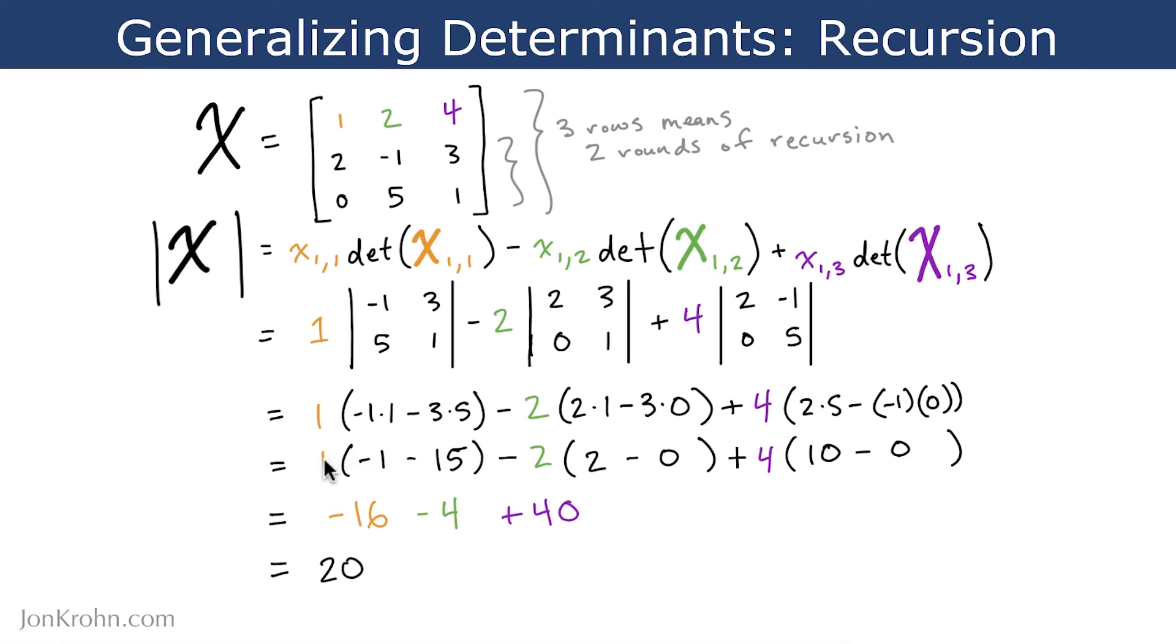Alright, and then 1 times negative 16 is negative 16. 2 times 2 is negative 4 because of the negative sign here. So negative 2 times 2, I should say. And then finally, 4 times 10 is 40. Alright, and then simplifying negative 16 minus 4 plus 40 comes out to 20.